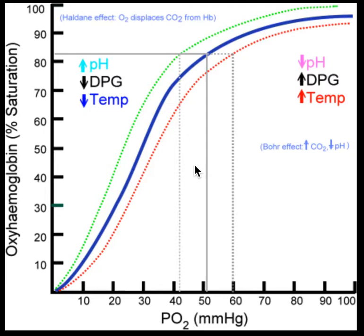It's basically just going to be the opposite of the right shift. We already went over that these three variables together — a decrease in pH, an increase in DPG, and an increase in temperature — represent collectively indicators of a high metabolic rate.